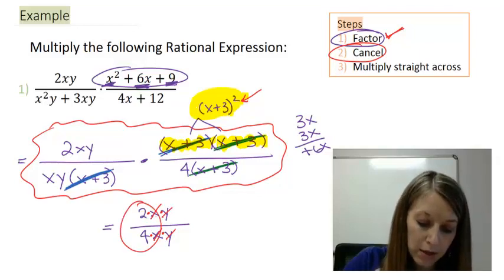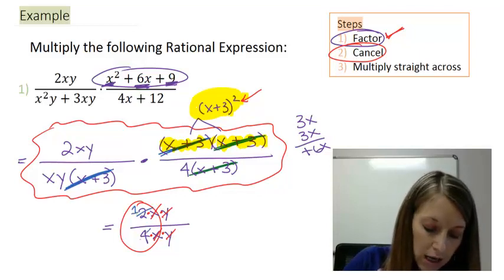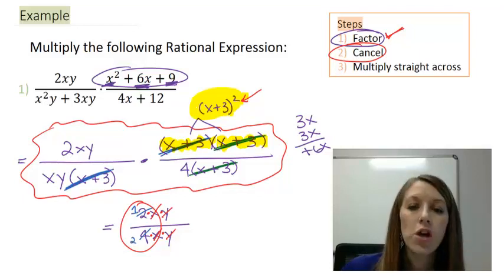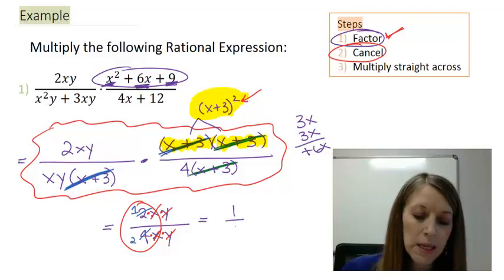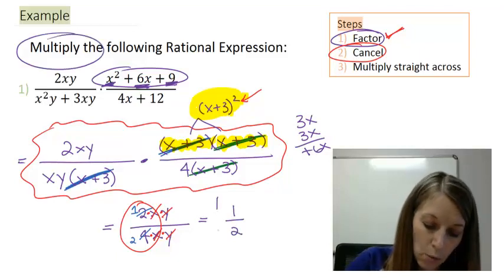Just divide both of them by 2. So in the top, 2 divided by itself gives me 1, and in the bottom, 4 divided by 2 gives me 2. So my most simplified answer in this rational expression multiplication problem is 1 half.